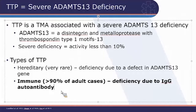TTP can be hereditary, which is extraordinarily rare to see in adults, though it does happen. The overwhelming majority of patients I treat have an autoimmune form — they have an IgG autoantibody directed against ADAMTS13.